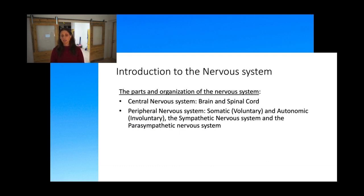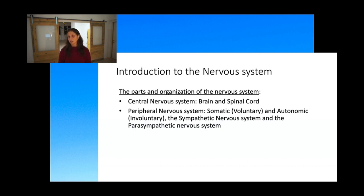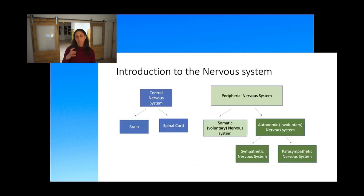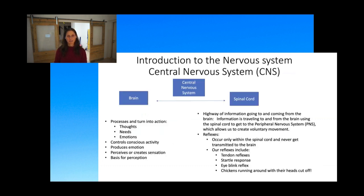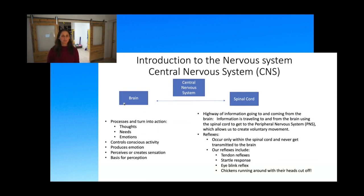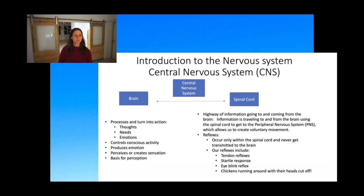We're not going to focus a lot on sympathetic versus parasympathetic in this course. We'll focus more on what is happening in the peripheral nervous system — the voluntary versus involuntary actions and the feedback loops that relate back to the brain and spinal cord. In a simple schema: central nervous system is brain and spinal cord; peripheral nervous system is voluntary and involuntary; the involuntary drives the sympathetic and parasympathetic.